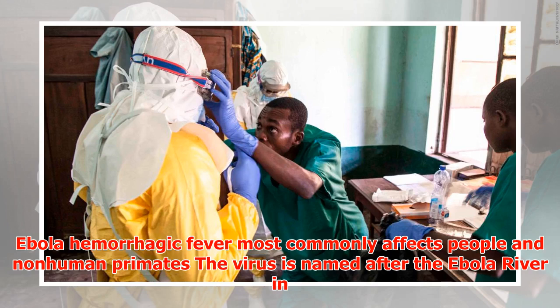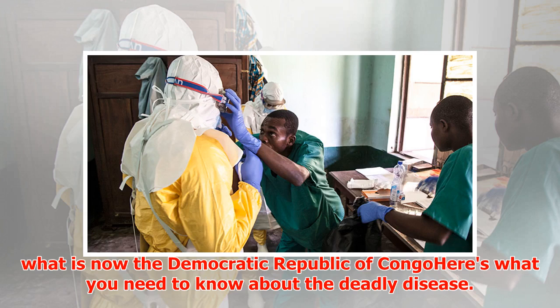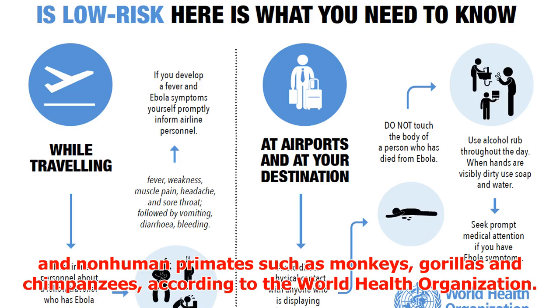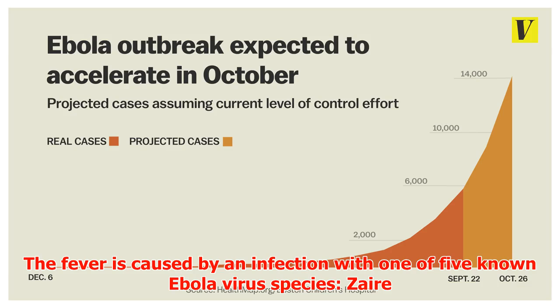Ebola hemorrhagic fever most commonly affects people and non-human primates. The virus is named after the Ebola River in what is now the Democratic Republic of Congo. Ebola hemorrhagic fever is a disease with a high fatality rate that most commonly affects people and non-human primates such as monkeys, gorillas, and chimpanzees. According to the World Health Organization, the fever is caused by an infection with one of five known Ebola virus species.